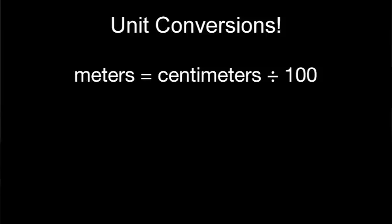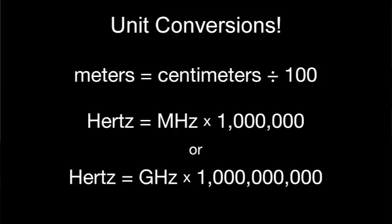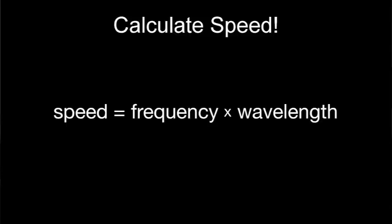Convert wavelength to meters by dividing by 100, and convert frequency to hertz by multiplying by 1 million if you measured in megahertz, or 1 billion if you measured in gigahertz. Now when you multiply your frequency and wavelength together, you'll get a speed that's calculated in a much more reasonable meters per second.